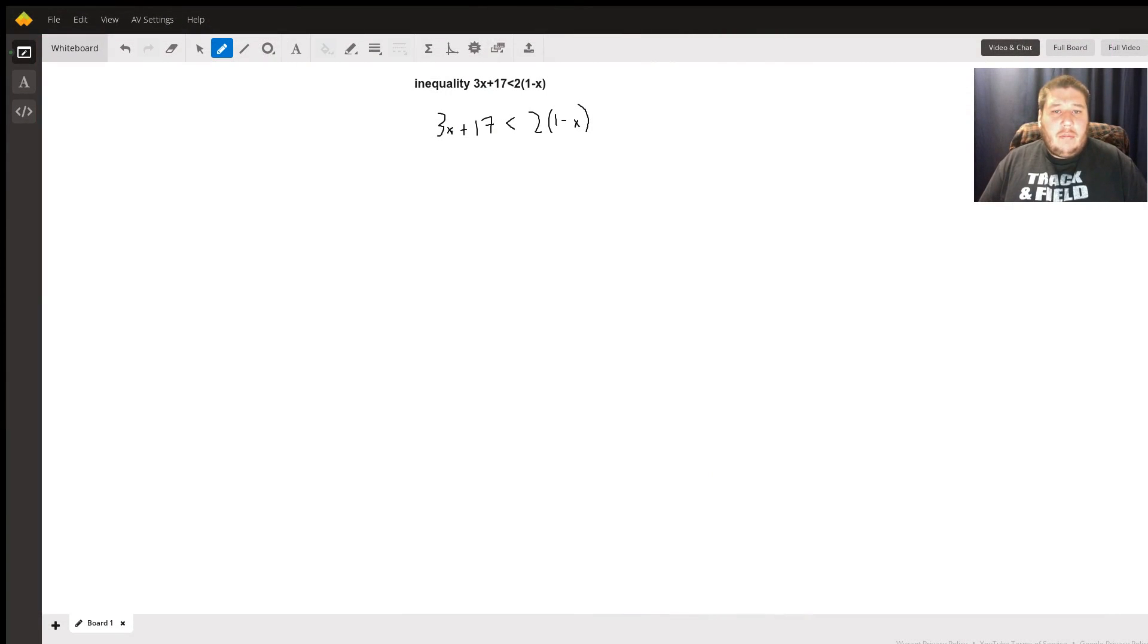Hi there, Rob here, and today I'm going to solve this inequality: 3x plus 17 is less than 2 times 1 minus x.